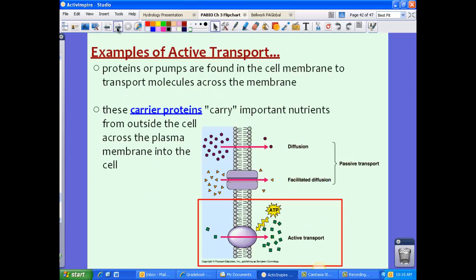Some examples of active transport are those pumps I mentioned earlier. Proteins, or pumps, are found in the cell membrane and transport molecules across the membrane. Specific ones called carrier proteins will actually carry important nutrients from outside the cell to inside the cell. Remember, we're specifically talking about activities that require energy.